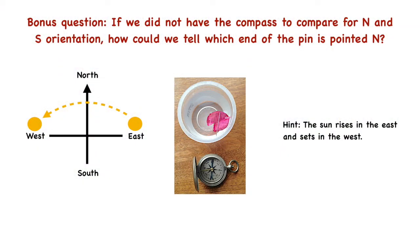Here's a bonus question. If we do not have the compass to compare for north and south orientation, how could we tell which end of the pin is pointed north? And here's a possible hint of the solution. The sun rises in the east and sets in the west.